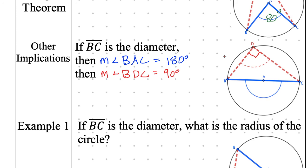One thing I'll also point out: whenever we have a 90-degree triangle, that unlocks a lot of different theorems. I've now unlocked a² + b² = c² — the Pythagorean theorem — because that applies to right triangles. I've also unlocked sine, cosine, and tangent. So I'm bringing in all the stuff from our last unit. If you don't remember what SOH-CAH-TOA means, you're going to have to review, because they're coming up again.